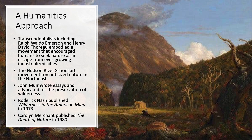When looking at environmental history, it's also important to recognize a humanities approach. Transcendentalists including Ralph Waldo Emerson and Henry David Thoreau embodied a movement that encouraged humans to seek nature as an escape from ever-growing industrialized cities. The Hudson River School art movement romanticized nature in the Northeast. John Muir wrote essays and advocated for the preservation of wilderness. Roderick Nash published Wilderness in the American Mind in 1973, and Carolyn Merchant published The Death of Nature in 1980.